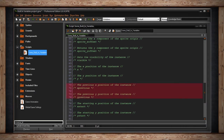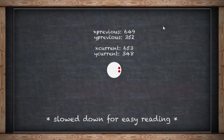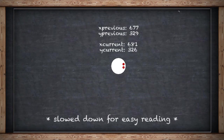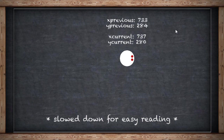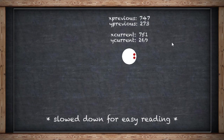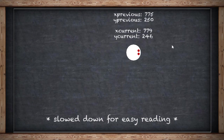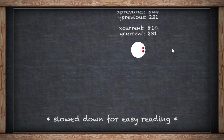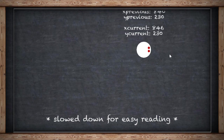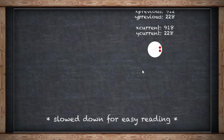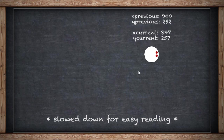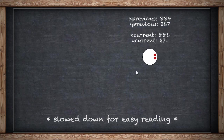XPrevious and YPrevious are the X and Y position of your instance one step ago. So if your instance is moving 5 pixels to the right per step and your current position is 300 X, then your XPrevious was 295 — just minus 5 from that. It's a great way to get the previous X and Y position of your instance, meaning the position one step ago.